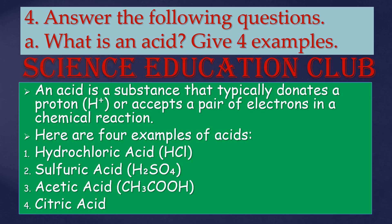What is an acid? Give four examples. An acid is a substance that typically donates a proton or accepts a pair of electrons in a chemical reaction. Four examples of acids: hydrochloric acid, sulfuric acid, acetic acid, and citric acid.